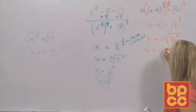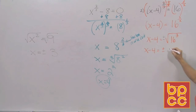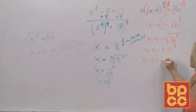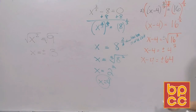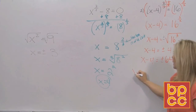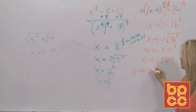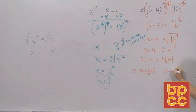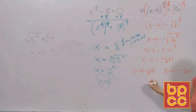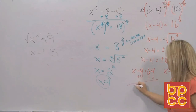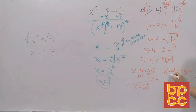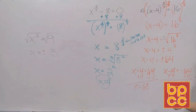So we have x minus 4 equals plus or minus the square root of 16, which is 4, cubed. What is 4 cubed? 4 times 4 times 4 is 64. There are really two equations: x minus 4 equals positive 64, and x minus 4 equals negative 64.